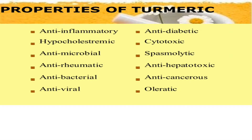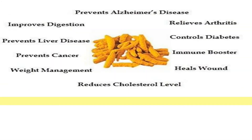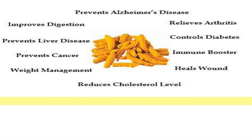Now let's move to the healing power of turmeric. It prevents Alzheimer's disease, which is basically related to memory loss. It also improves digestion, prevents liver disease, prevents cancer, aids in weight management, reduces cholesterol level, heals wounds, boosts immunity, controls diabetes, and relieves arthritis. These are some major healing powers of turmeric.